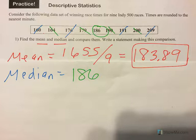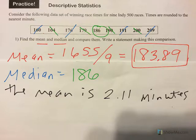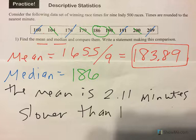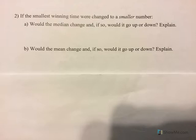And therefore, for a comparison statement, I would say something like: the mean is 2.11 minutes slower — because we are talking about minutes of time — than the median. And that would be a comparison statement.